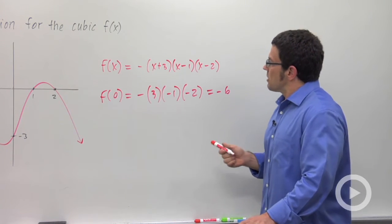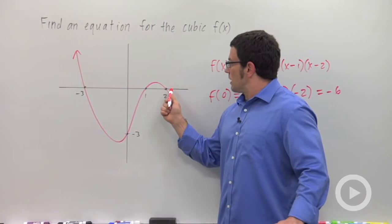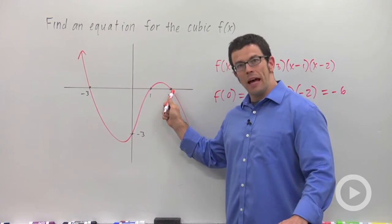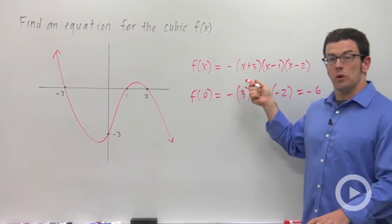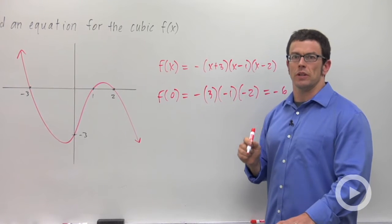Well, that's because remember that there are lots and lots of polynomials, lots and lots of cubics that pass through these three x-intercepts. Any multiple of this polynomial will pass through those three intercepts.